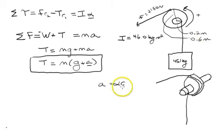So if we make those two substitutions, the substitution for the tension and the substitution for the acceleration, we'll get an equation that looks like this.